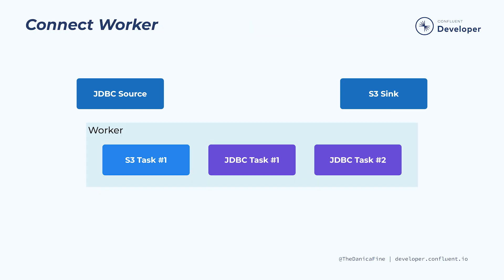But where do the tasks actually run? Kafka Connect runs under the Java Virtual Machine, or JVM, as a process known as a worker. Each worker can execute multiple connectors. When you look to see if Kafka Connect is running or want to look at its log file, it's the worker process that you're looking at. Tasks are executed by Kafka Connect workers.